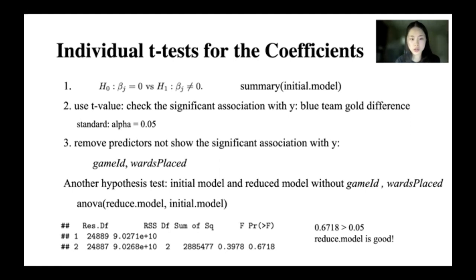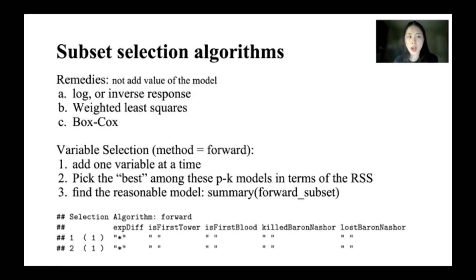We also construct another hypothesis test with the initial model and the reduced model. According to the output of the ANOVA, we can conclude that the reduced model is good. We also tried to use remedies, but it does not add value to our model.